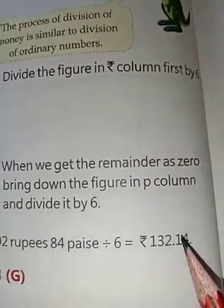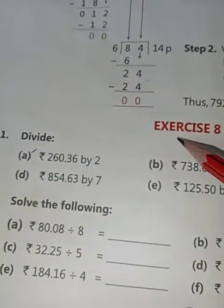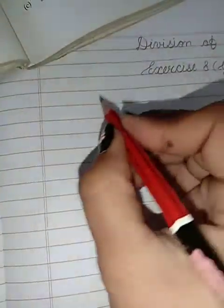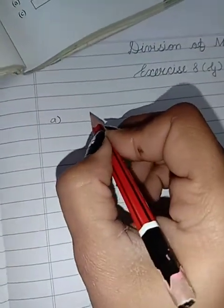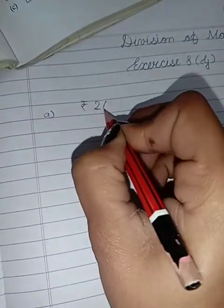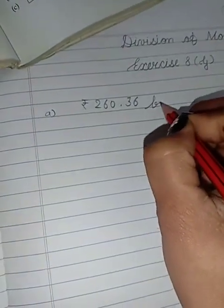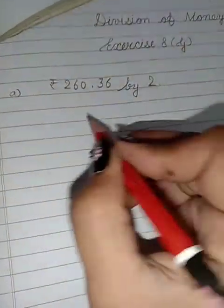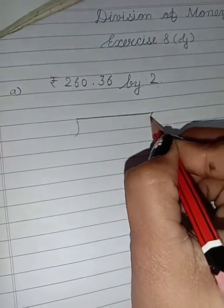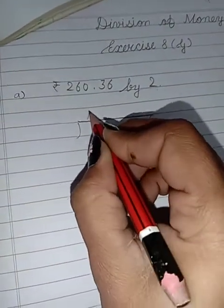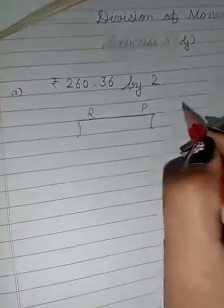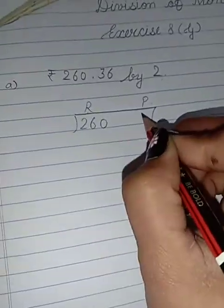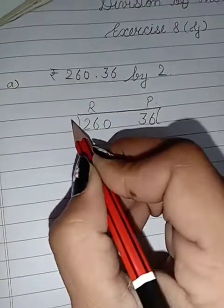I am doing first sum of exercise 8G. Please listen carefully. I am doing first part of sum number one: rupee 260 and 36 paise divided by 2. It means divide by 2. As I told you, firstly we will arrange these numbers into rupee and paise column separately. Here you can write in this way. First rupee, 260, and paise, 36.